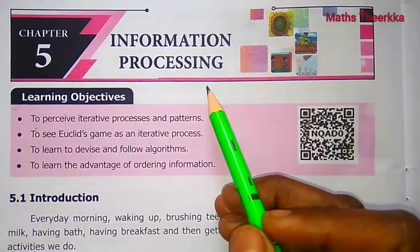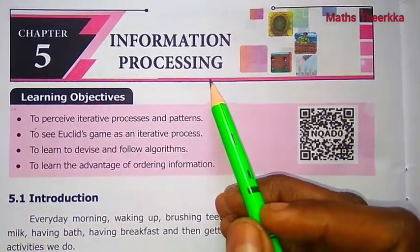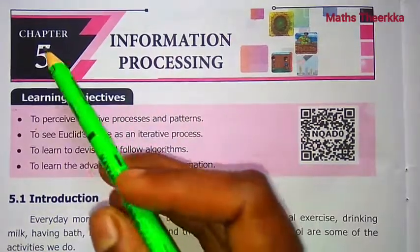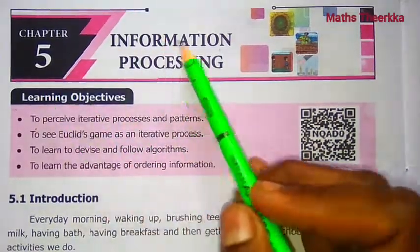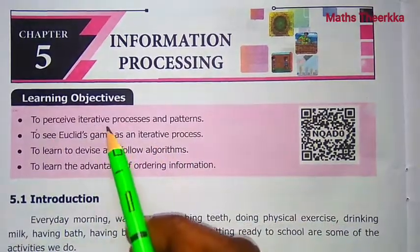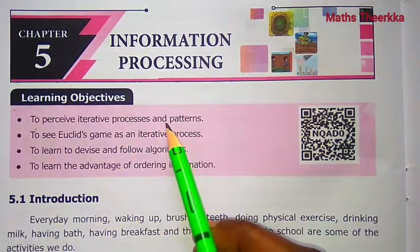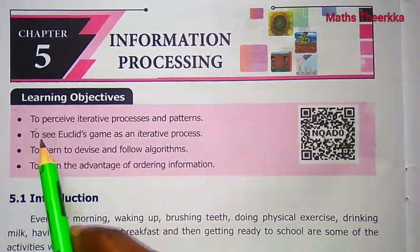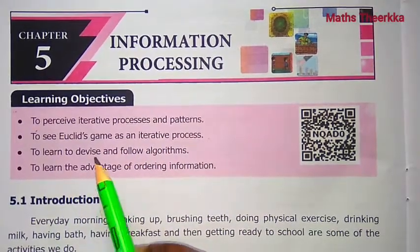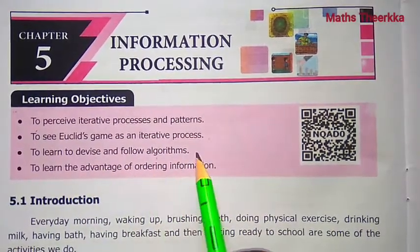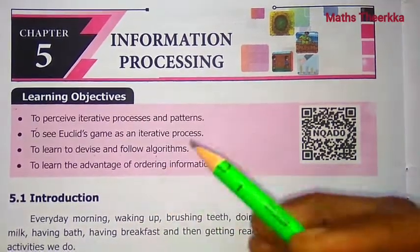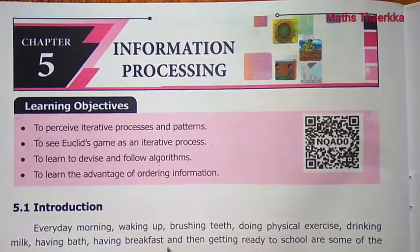Hello students, welcome to Max Thirka channel. 6th standard Samacheer book, term 3, chapter 5: Information and Processing. Learning objectives: to perceive interactive processes and patterns, to see the Euclid game as an interactive process, to learn to devise and follow algorithms, and to learn the advantages of ordering information. Try these and example sums.